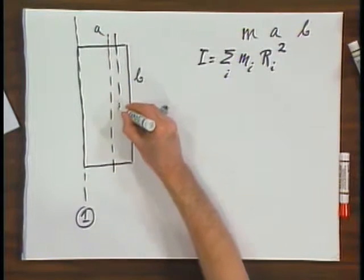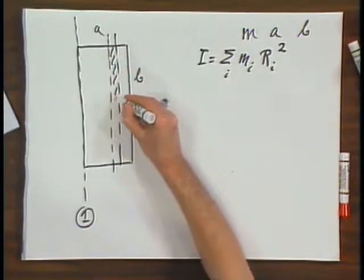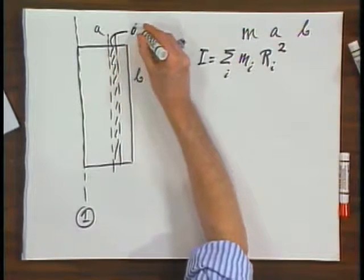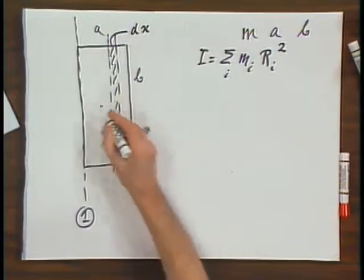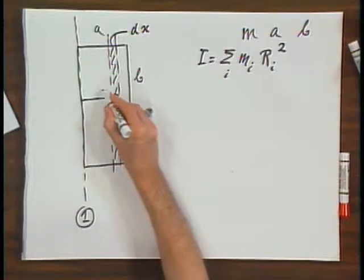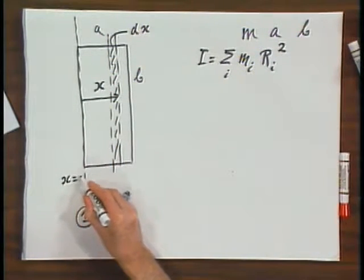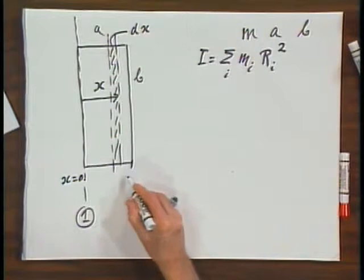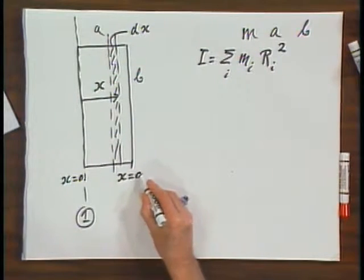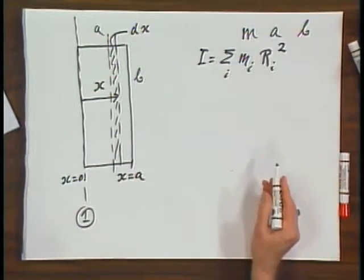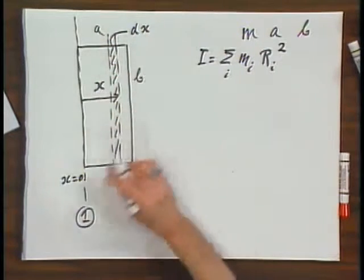I slice out here a ribbon, and the ribbon has width dx, and this distance to the ribbon is x, so x equals 0 here at the rotation axis, and x equals A here at the edge of the sheet, the rectangular sheet.